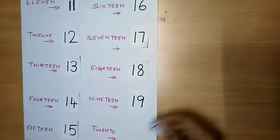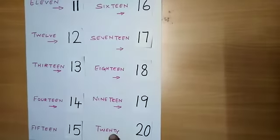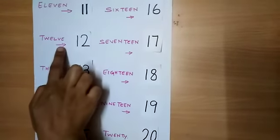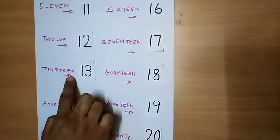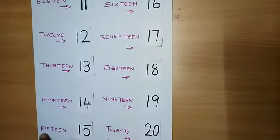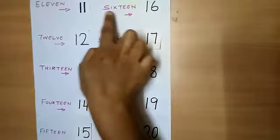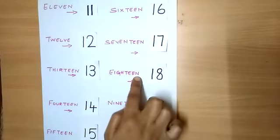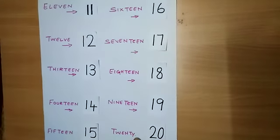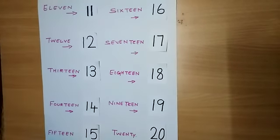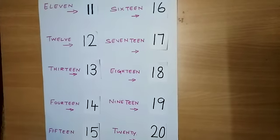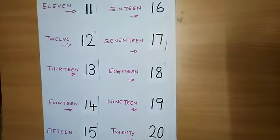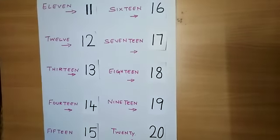So let me arrange number 20 to the number name 20. So this is 11, 12, 13, 14, 15, 16, 17, 18, 19, 20. Parents, kindly make your child do this activity so that children can easily identify the number and number name. Thank you.